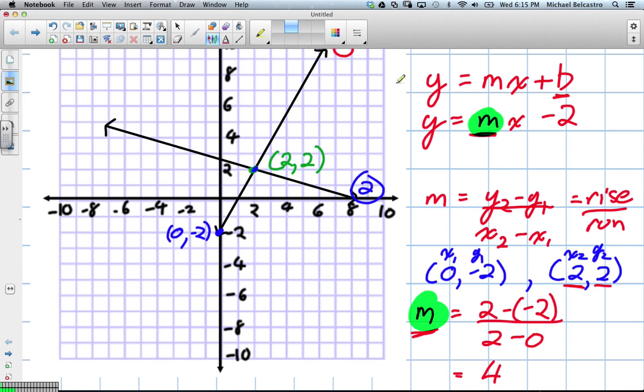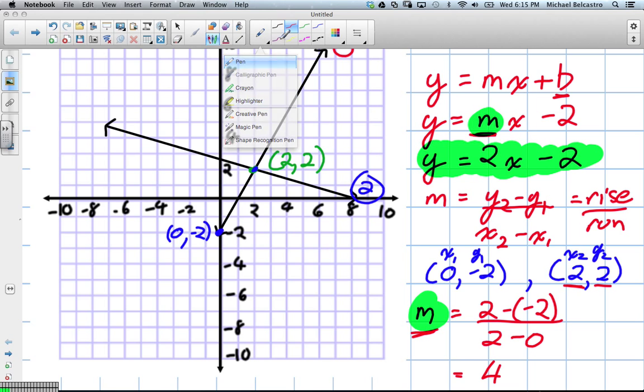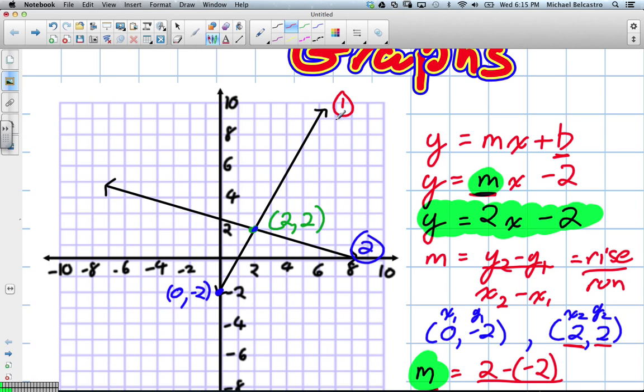Which means in our formula, the formula of that line is y equals 2x minus 2. So there's our formula. We've just found it. But that's for line number 1. We had to find the slope and we had to find the y-intercept. So this is the equation of this line.